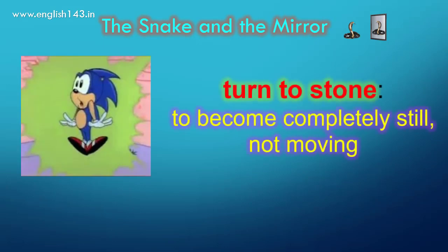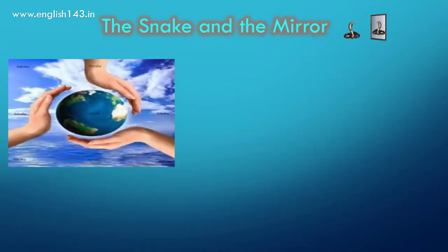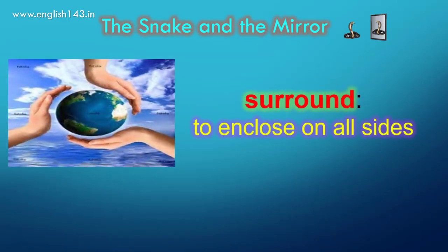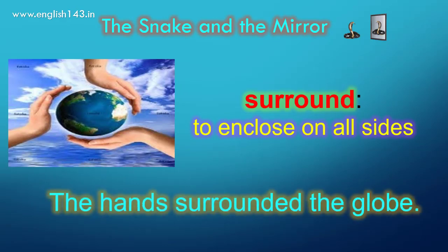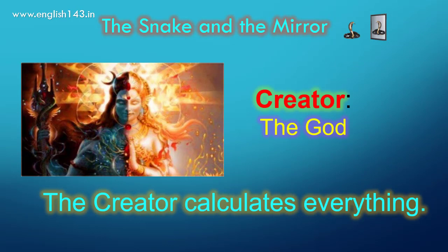Turn to stone means to become completely still, not moving. The doctor turned to stone when the snake landed on him. Surround means to enclose on all sides — the hands surrounded the globe. Creator means God; the creator calculates everything.